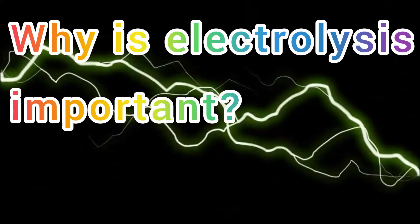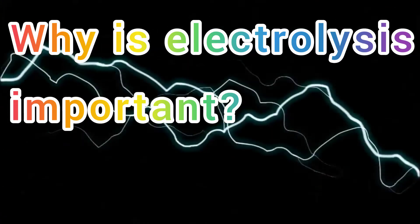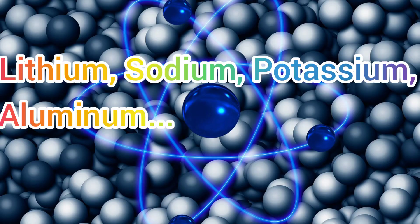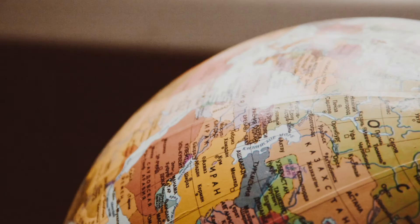Why is electrolysis important? Electrolysis breaks the molten ionic compound down to its elements, giving the metal at the cathode and the non-metal at the anode. So it's a very important process. We depend on it to obtain reactive metals such as lithium, sodium, potassium, and aluminum from compounds dug from the earth.